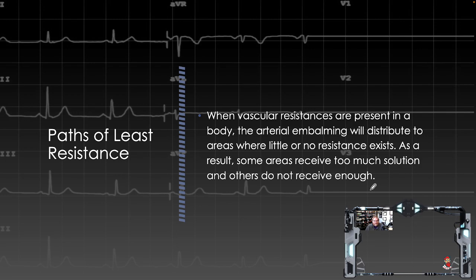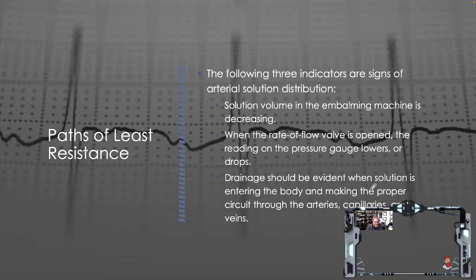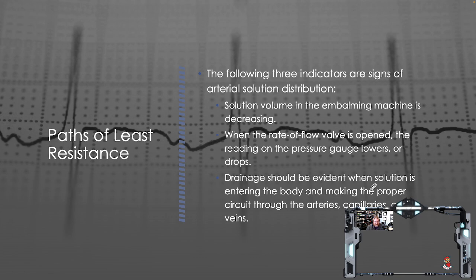When vascular resistances are present in a body, arterial embalming will distribute to areas where little to no resistance exists. As a result, some areas get too much solution and other areas don't get enough. There are three indicators of arterial solution distribution: solution volume in the embalming machine is decreasing; when the rate of flow valve is open, the reading on the pressure gauge lowers or drops — if the pressure gauge doesn't move when you open the rate of flow valve, something's not flowing; and drainage should be evident.